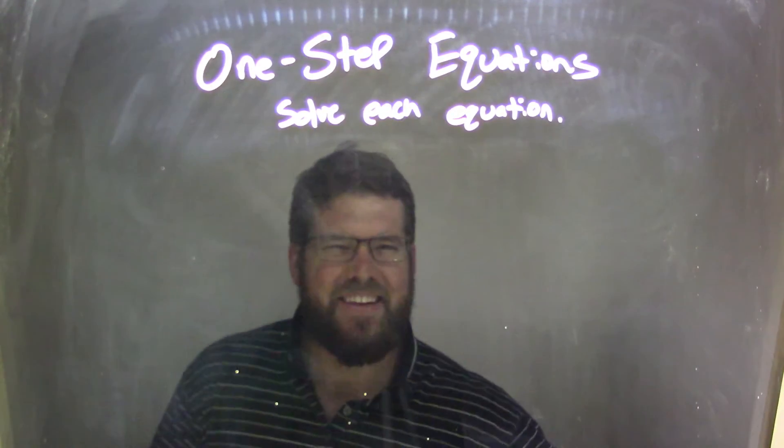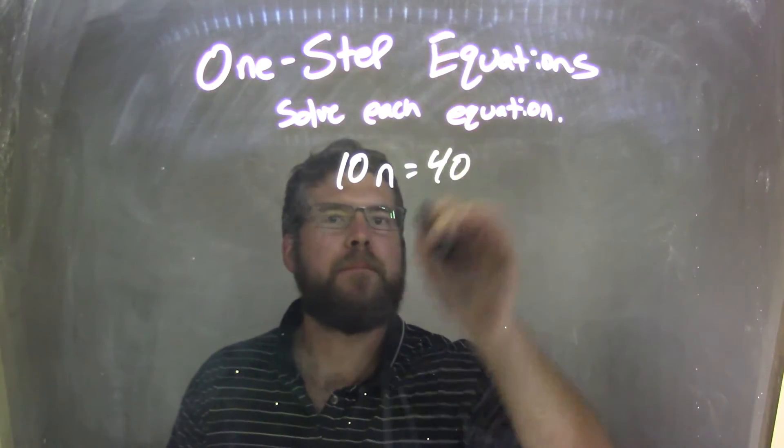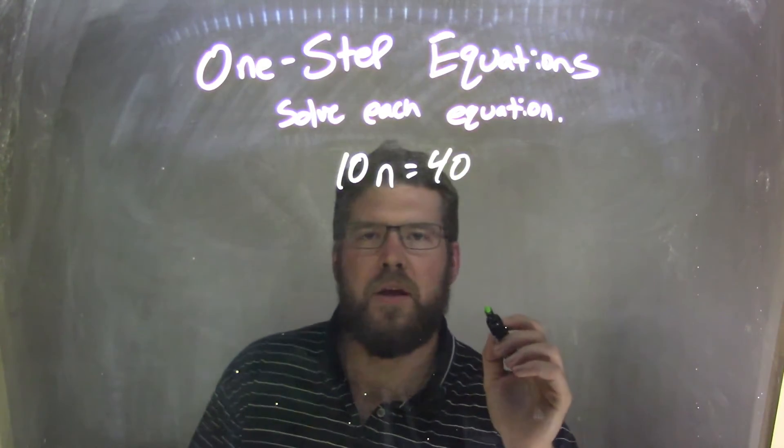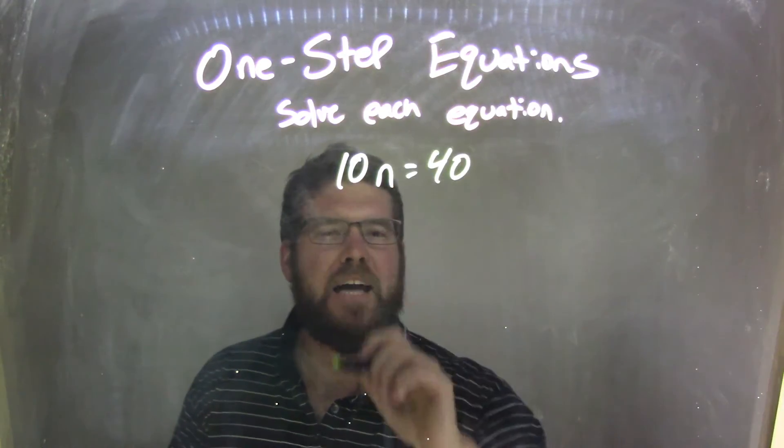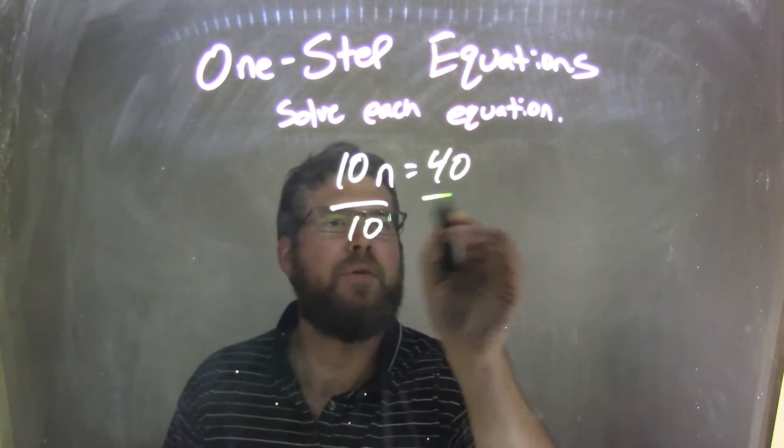If I was given this equation, 10n equals 40. Well, that's multiplication, right? 10 times n. The opposite of multiplication is division, so I'm going to divide by 10 on both sides.